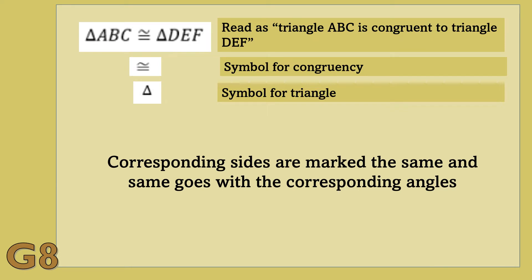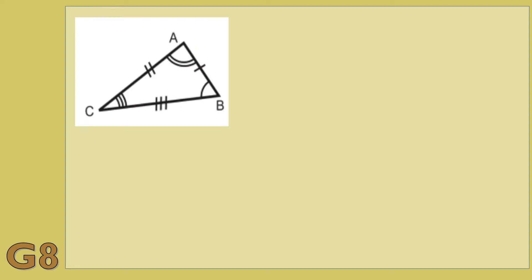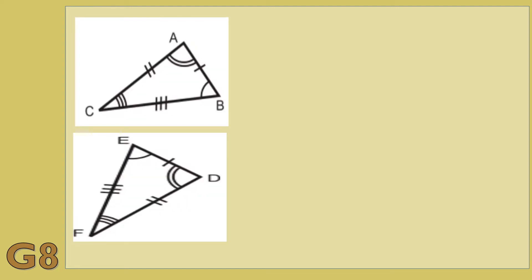Corresponding sides are marked the same, and same goes with the corresponding angles. Now, I want you to look at these two figures. This is triangle ABC, and this is triangle DEF.